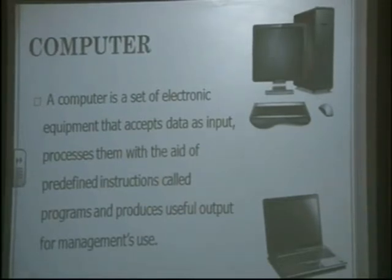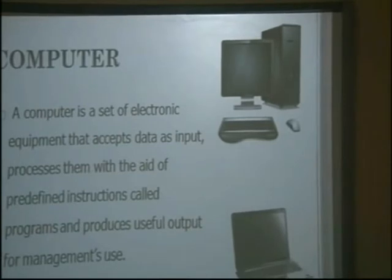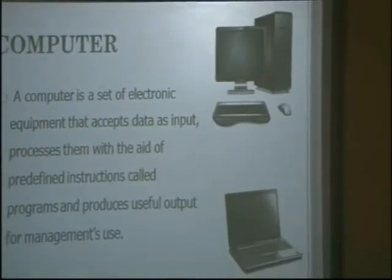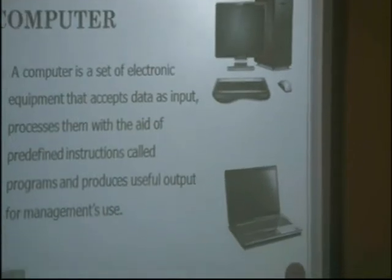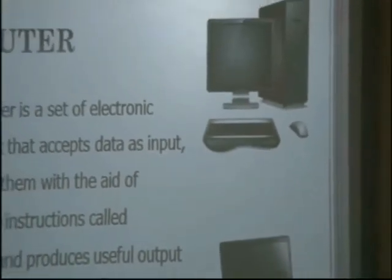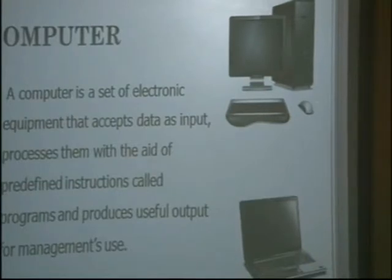When we talk about a computer, this is a picture of how a computer looks like. Up here we have the desktop computer and down here we have the laptop computer. The desktop computer comprises the monitor, the system unit, the keyboard, and the mouse. All these things that you are seeing on the desktop computer are embedded inside the laptop computer. When we say a computer accepts data, it accepts data using the input devices, which are the keyboard and the mouse.